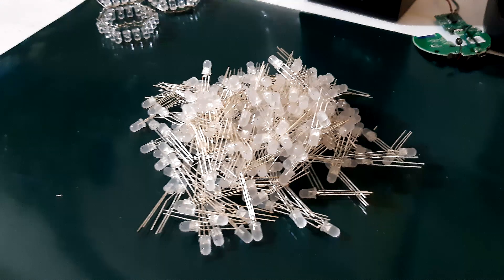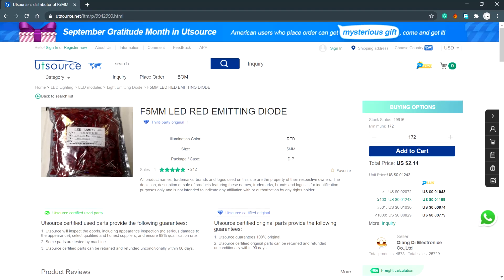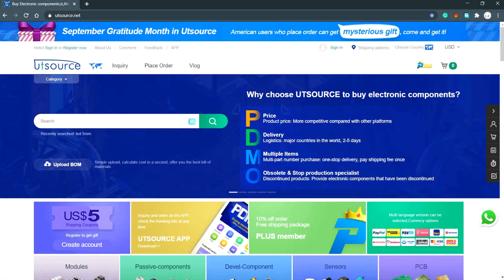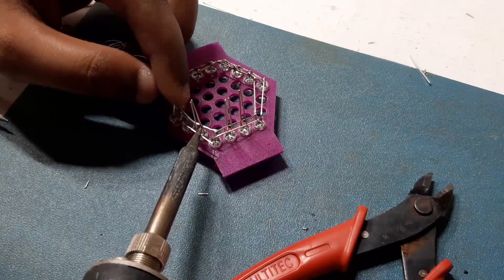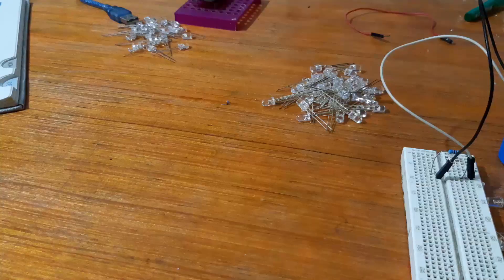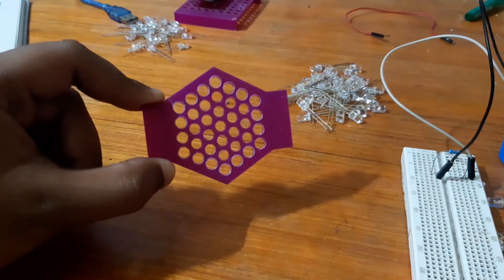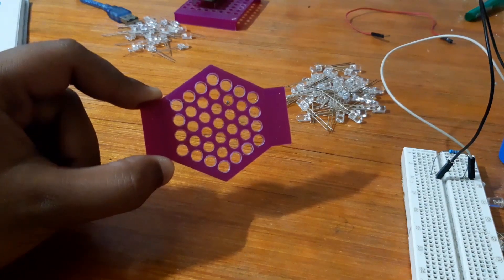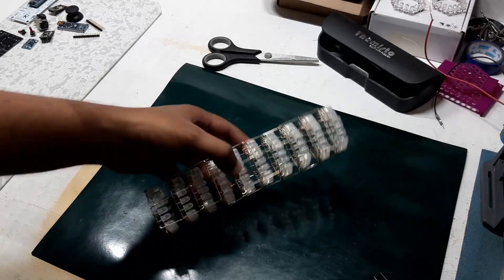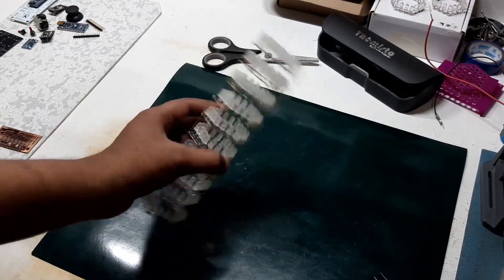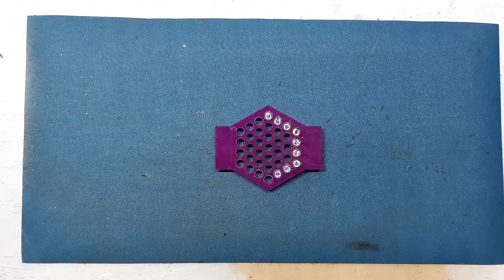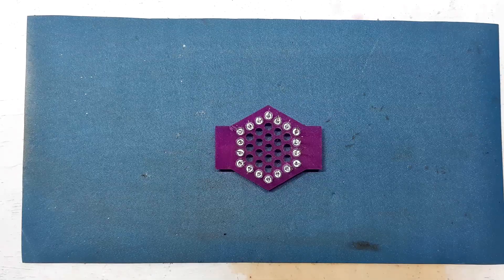I bought these 5mm LEDs from UTSource.net, link is in the video description. This LED tower is made possible because of this useful jig which I found on Thingiverse. Because of this jig, making the hexagon pattern became so much easier. This LED tower consists of a total of 10 levels. Each level is made up of 18 LEDs soldered together in parallel in a hexagon shape.